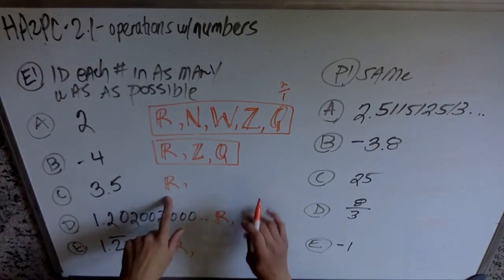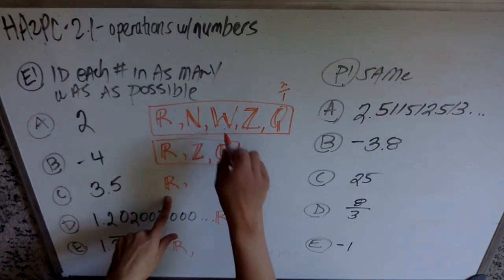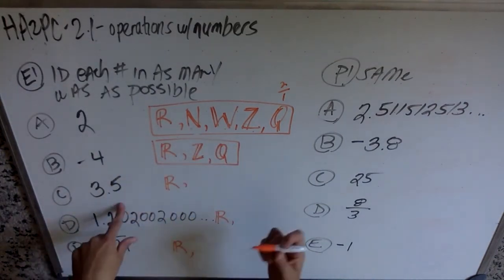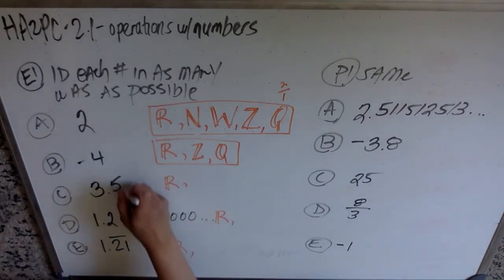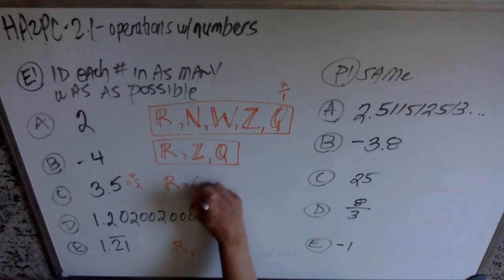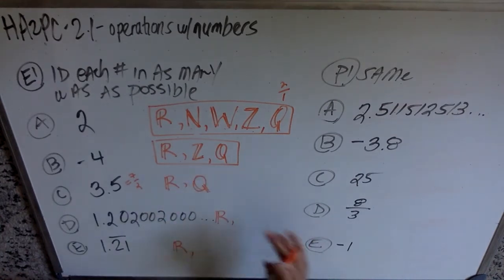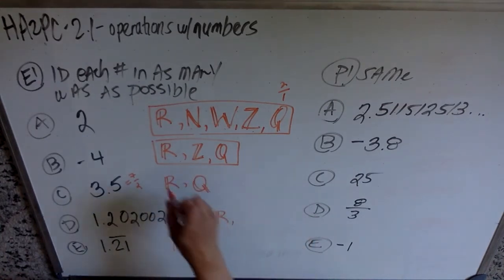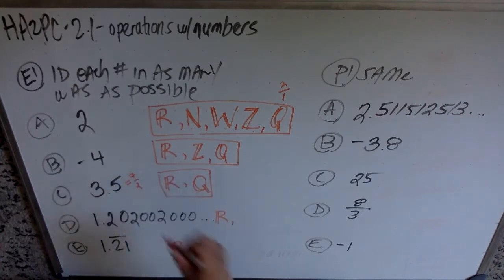3.5. It can't be any of these, natural or whole or integer, because it's got this extra decimal. If it helps you to see if this is the same as 7 halves, great. You don't have to, because since it is a terminating decimal, it has to be rational. So, it's going to be a real number and a rational number, which is R and Q.